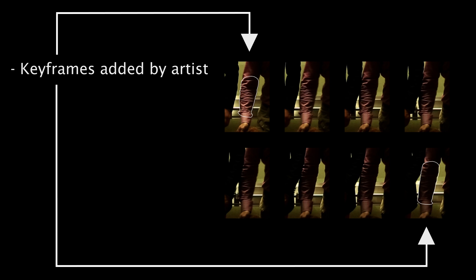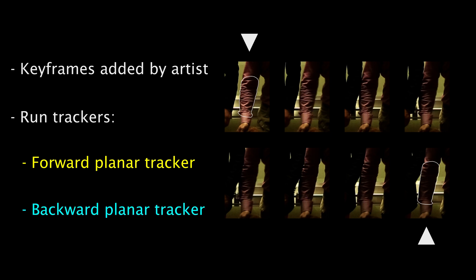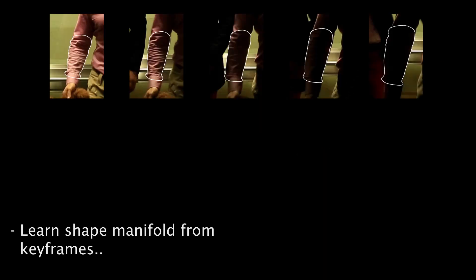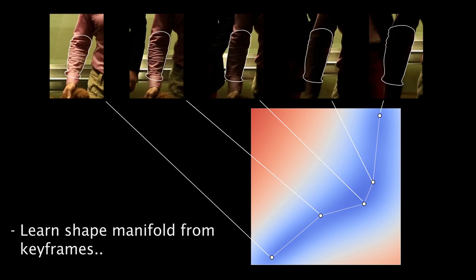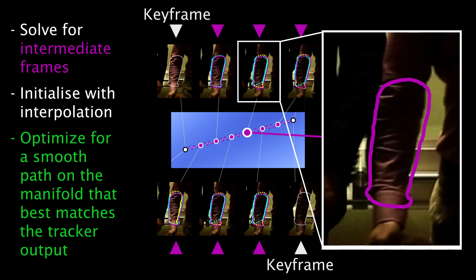In our workflow, the artist begins by providing some keyframes. We then run a forward and backward planar tracker at interactive rates to propagate the shape to intermediate frames. In general, these appearance trackers will be subject to drift. From the entire set of labelled keyframes, we build a shape manifold — a generative model of 2D shapes specified by the artists. Using this model, we solve for the intermediate frames by finding the smoothest paths on the manifold between the keyframes that most closely matches the tracker output. When the tracker has performed well, we should have a good agreement, but when the tracker drifts, the manifold will prevent unreasonable shapes from being generated.